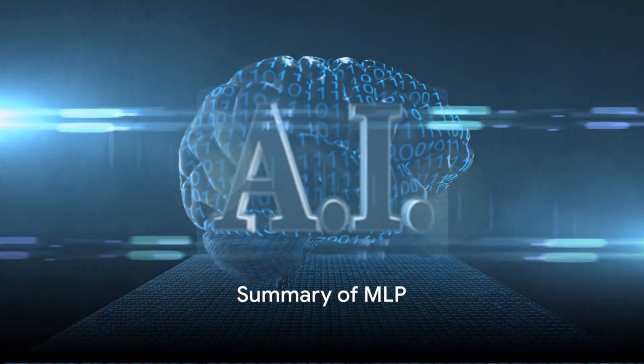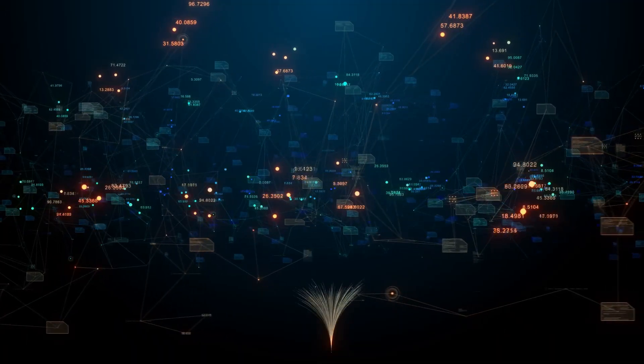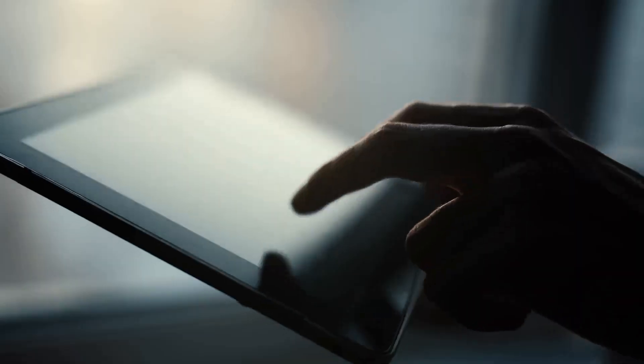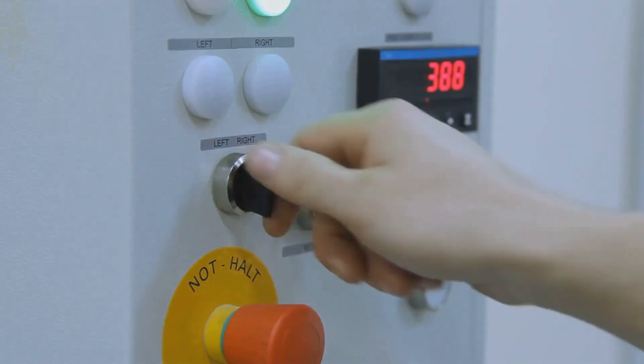To summarize, a multi-layer perceptron is a type of artificial neural network, organized into layers. It takes in data, processes it through one or more hidden layers using weights, and delivers a result. And if the result isn't quite right, it adjusts its weights to learn and improve.